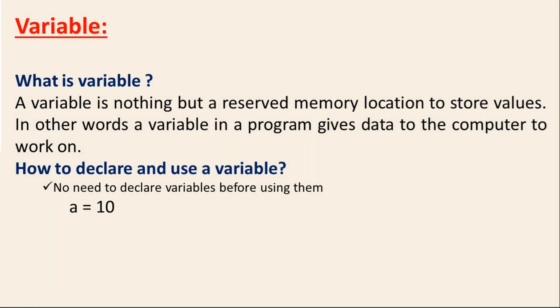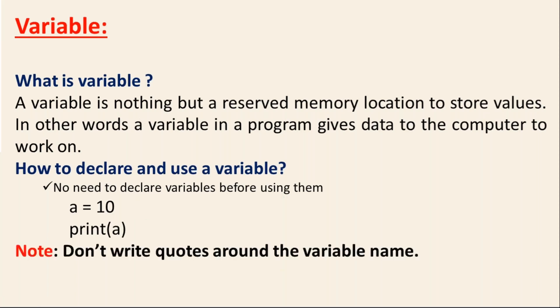Open an editor — you can use command line editors or a GUI editor. Write a line like 'a equals 10.' If you want to print the value of a, write 'print a' and the value of a will be printed. When printing a string you use quotation marks, but when printing a variable value, don't use quotations. If you use quotations it will print as-is — you'll get X, not the X value.